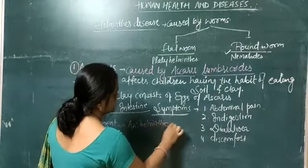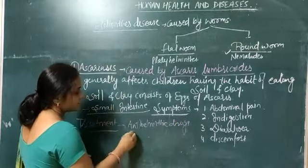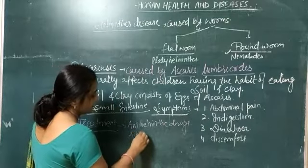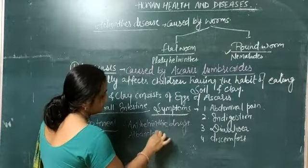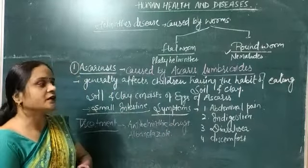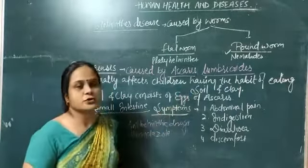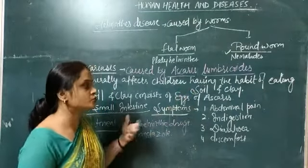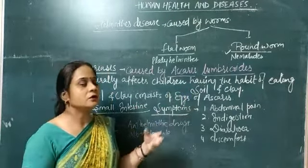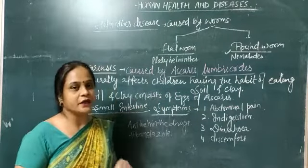Anti-helminthic drugs can be used for treatment, the most popular example being albendazole. And if we want to prevent this disease, we can change the habit of children eating soil and clay, so that the fertilized eggs of Ascaris do not enter the body.